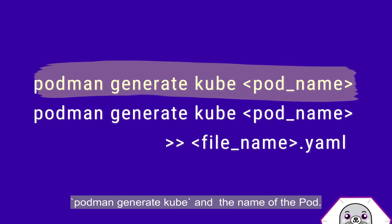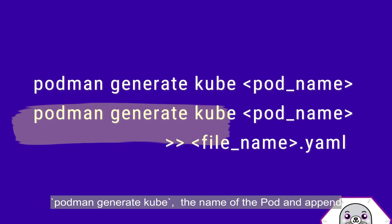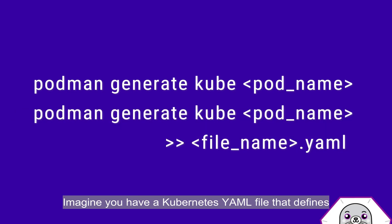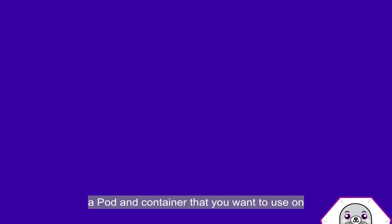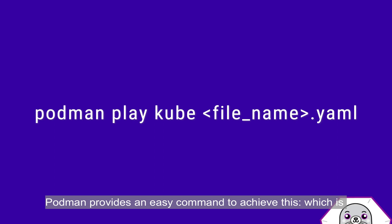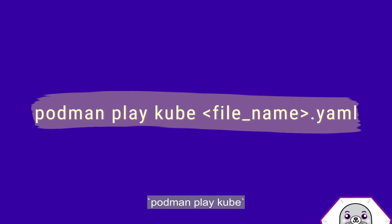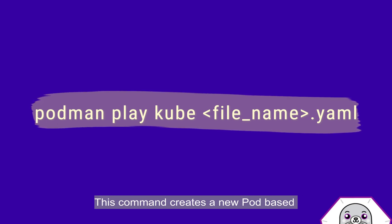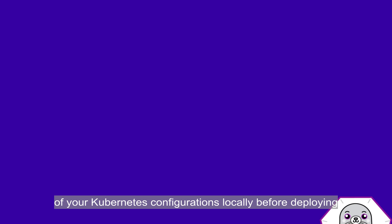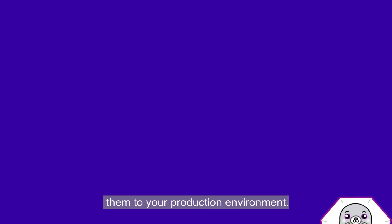The process of generating the Kubernetes YAML file from Podman is quite simple. You just need to use: podman generate kube with the name of the pod. Or you can use podman generate kube with the pod name and append the result to a YAML file. Podman also provides the podman play kube command, which creates a new pod based on a Kubernetes YAML file. This allows you to test your Kubernetes configuration locally before deploying to a production environment.